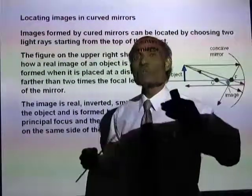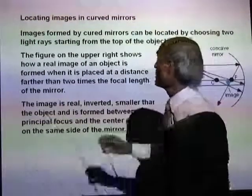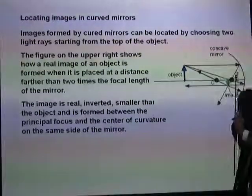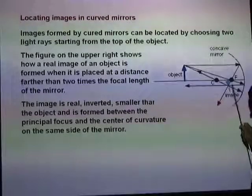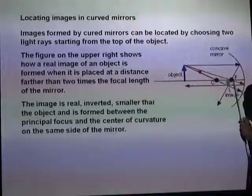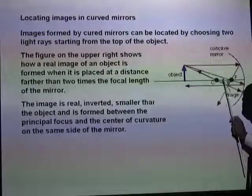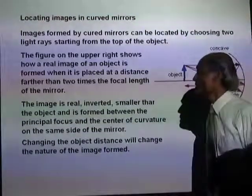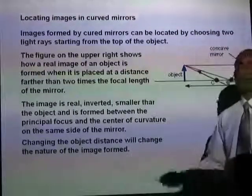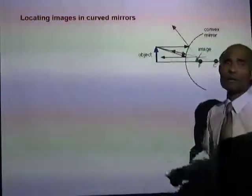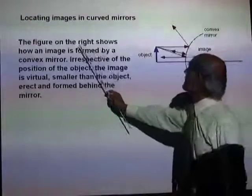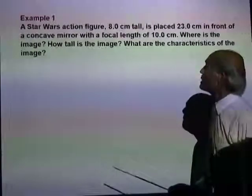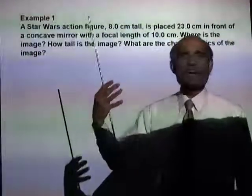If you place an object beyond the center of curvature, the image formed will be very small, inverted, and formed between the principal focus and the center of curvature on the mirror. Changing the object distance will change the nature of the image. If you use a convex mirror, the image produced will always be virtual.